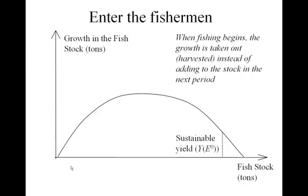Now let's go into this fishery and start doing some harvesting. Imagine a single boat enters the fishery — it catches some fish and moves the stock back to a lower level, at which it's able to grow. With that one boat out there, it's able to harvest year after year that same quantity of fish. It simply takes the natural growth off, leaving the fishery at the end of the year with the same quantity of stock as it started. This is what's known as a sustainable yield for that particular level of effort.